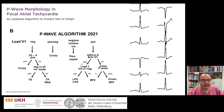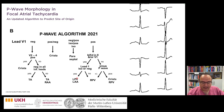The next step in this algorithm is to look at the P-wave in lead 1, and this is positive — so the P-wave should come from somewhere close to the left pulmonary vein or left atrial appendage.